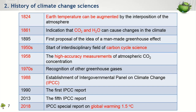Later on, in 1958, geochemist Charles David Keeling was employed to continuously monitor the level of CO2 in the atmosphere, when high-accuracy measurement of atmospheric CO2 began to be developed. During the 1970s, other greenhouse gases such as methane, nitrous oxide, and the chlorofluorocarbon family were also recognized as important anthropogenic greenhouse gases. And in 1979, the first World Climate Conference was held in Geneva, which led to the establishment of the World Climate Program.